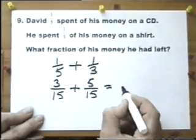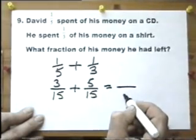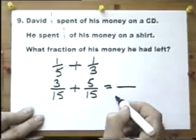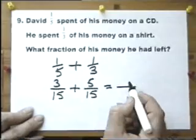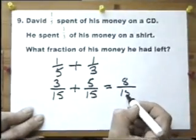So if we add those two together, don't be silly and add the bottom numbers together. Three-fifteenths and five-fifteenths is eight-fifteenths.